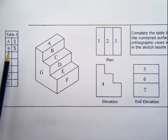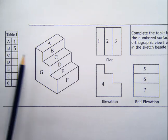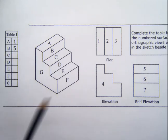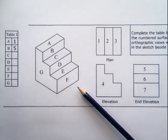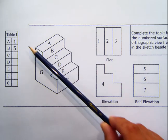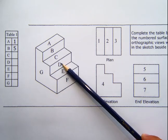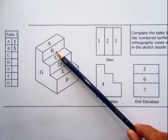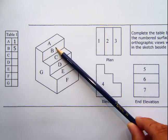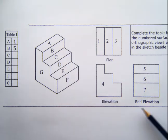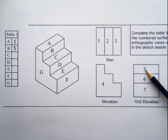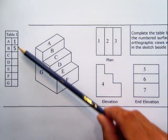So similarly, if we go for letter B, letter B is here, which is where I'd be able to see it looking from here, from the end elevation. So looking on the end elevation, I would see F, I would see D, and I would see B. So which step is B? It's the top step, so looking on the end elevation, I know that it is number five. So those two are already done for you.